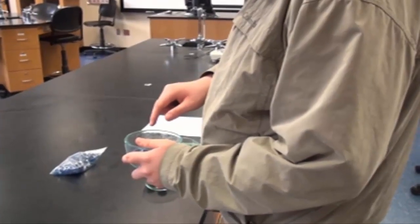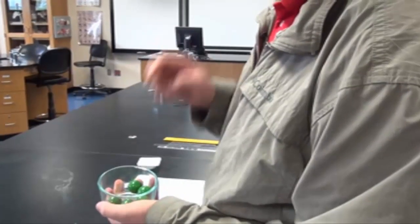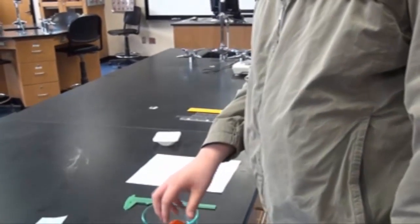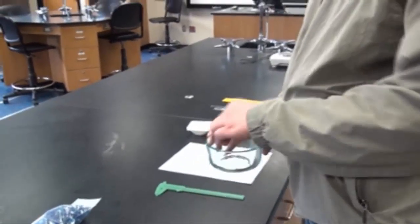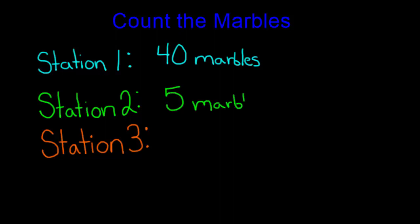The learners should first count the total number of marbles at each station. After learners count the marbles, they should record how many marbles were at each station. In our example, there were 40 marbles at the first station, five marbles at the second station, and one marble at the third station.